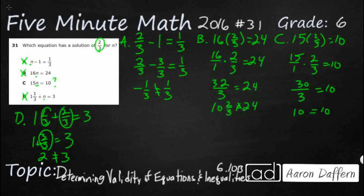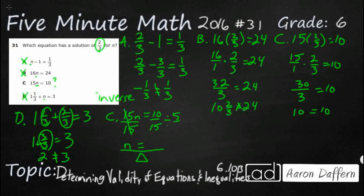Now, what is the simpler way to do this? Let me go back to C — we know that one works. 15n equals 10. Rather than plugging in 2 thirds, let's isolate the variable. The inverse operation of multiplication is division, so if we divide both sides by 15, we get n by itself on one side and 10 over 15 on the other. Reducing by 5 over 5, we get 2 thirds. You could isolate the variable for each of these, and you would find that the answer is C.